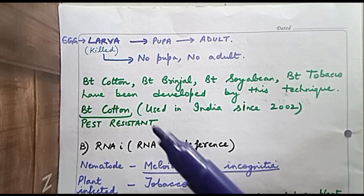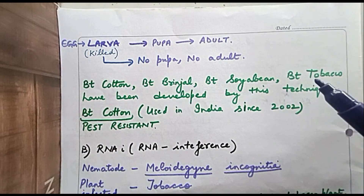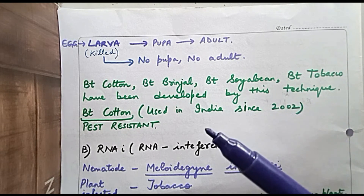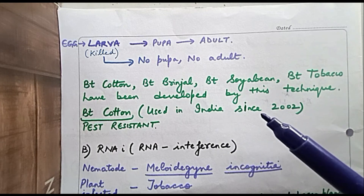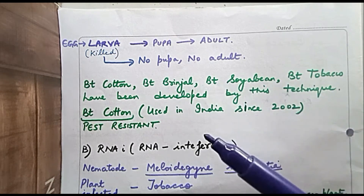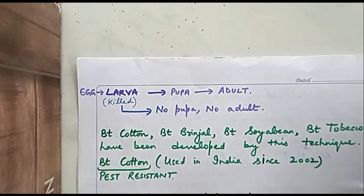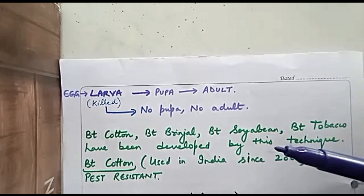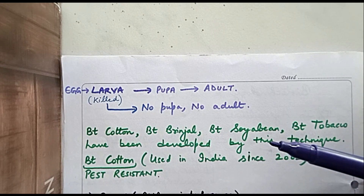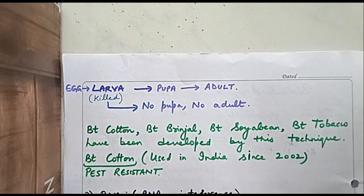Plants developed using this technique include Bt cotton, Bt brinjal, Bt soya bean, Bt tobacco, and others. All these plants are pest resistant. Bt cotton has been used in India since 2002. The production of Bt plants is a boon to agriculture, as plants can now naturally overcome the problem of pests.